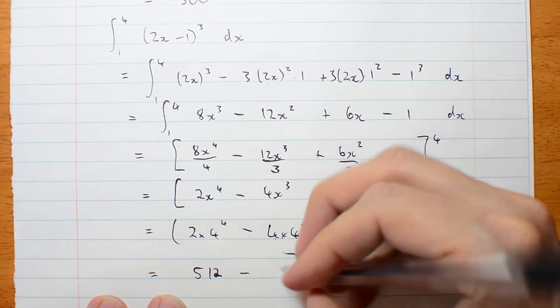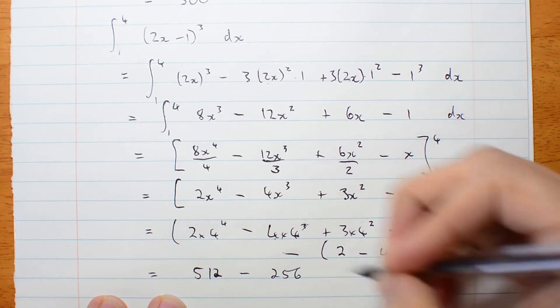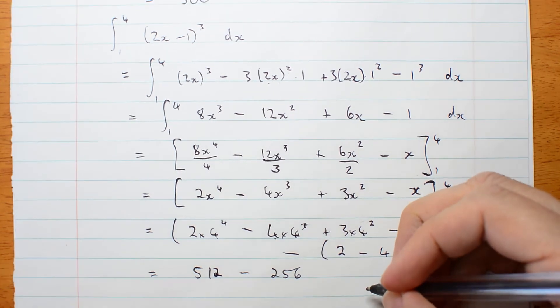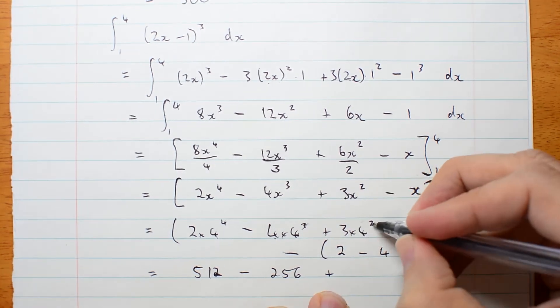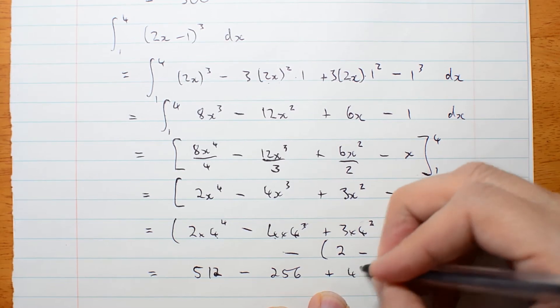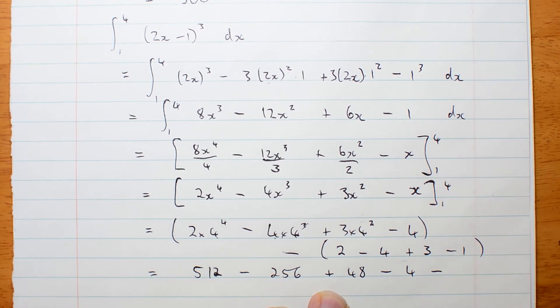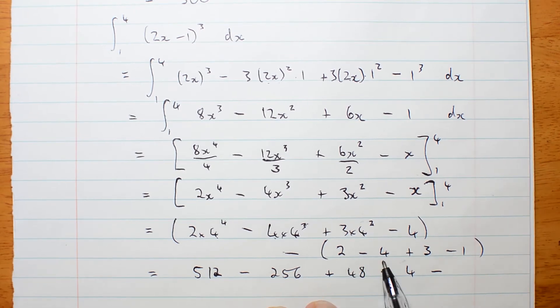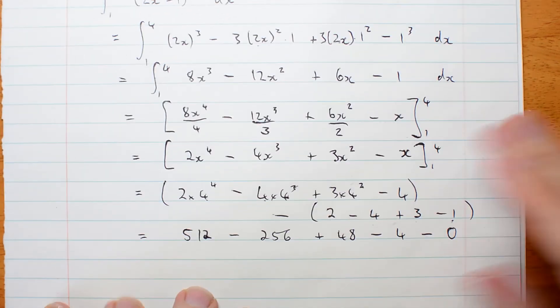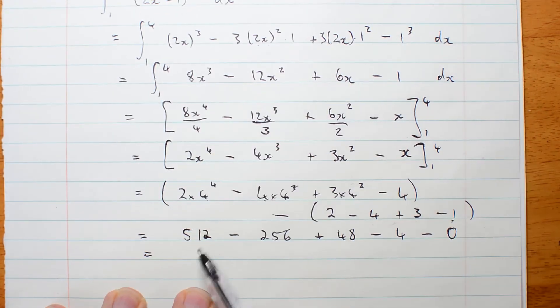So 4 cubed was 16 times 4 is 64. Oh, look, times 4, 256. 4 squared is 16 times 3 is 48 minus 4 minus, now what's in brackets? 2 take 4 is negative 2 plus 3 is positive 1 minus 1 is 0. Well, that was nice, wasn't it?